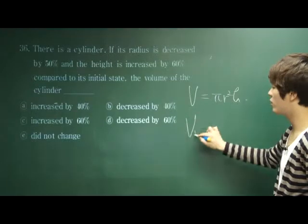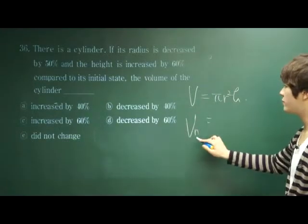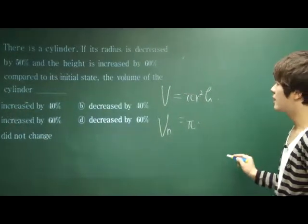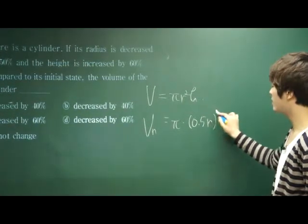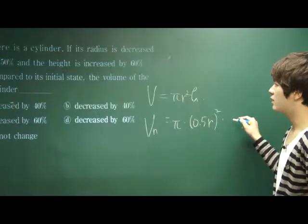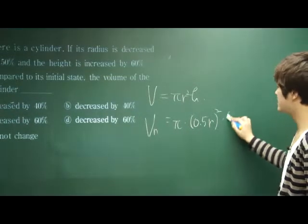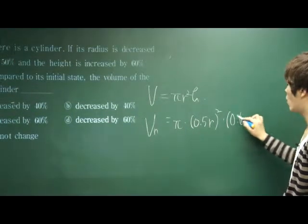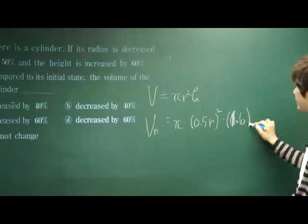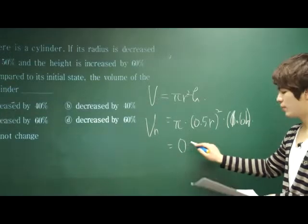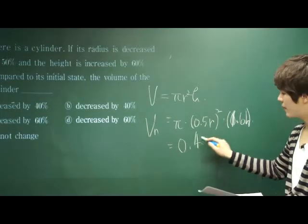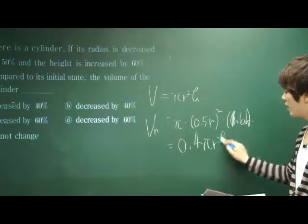So the volume of a cylinder was πr²h, right? But we are looking for the new volume. Volume of the new cylinder is π times, the radius has decreased by 50%, so 0.5r squared times, the height has increased by 60%, so it's 1.6h, right? Put this in your calculator, you will get it is equal to 0.4πr²h.